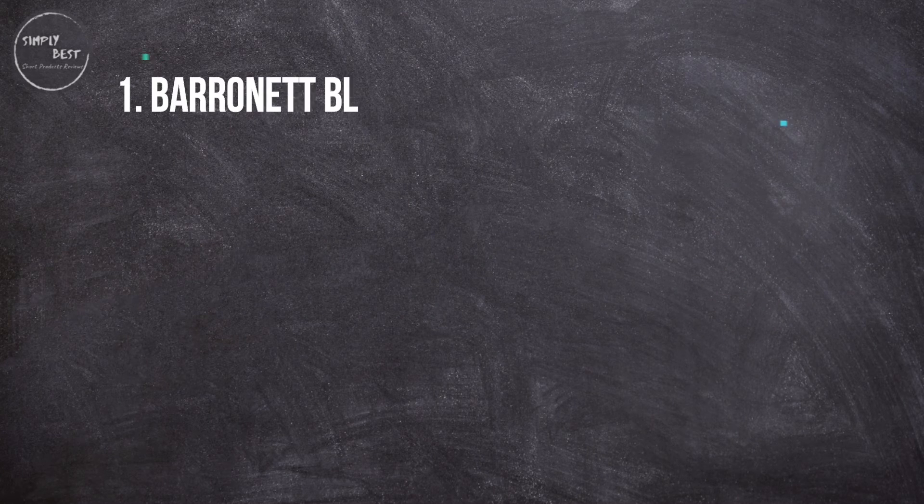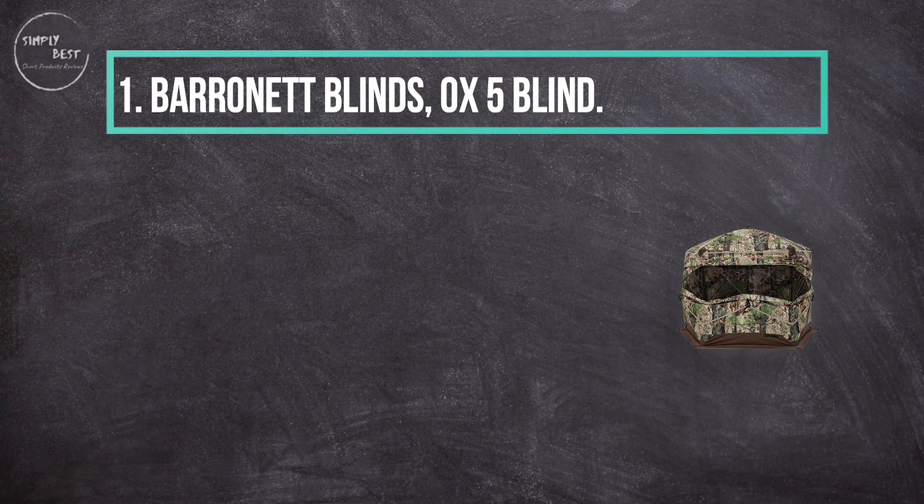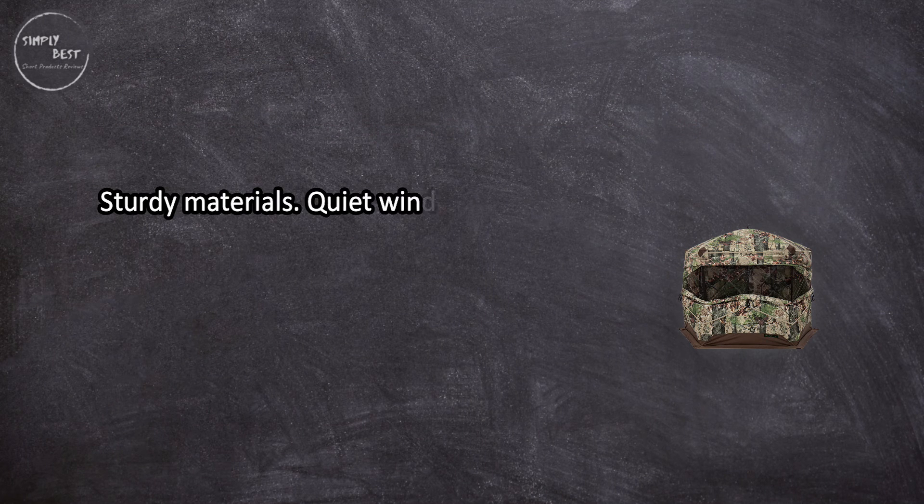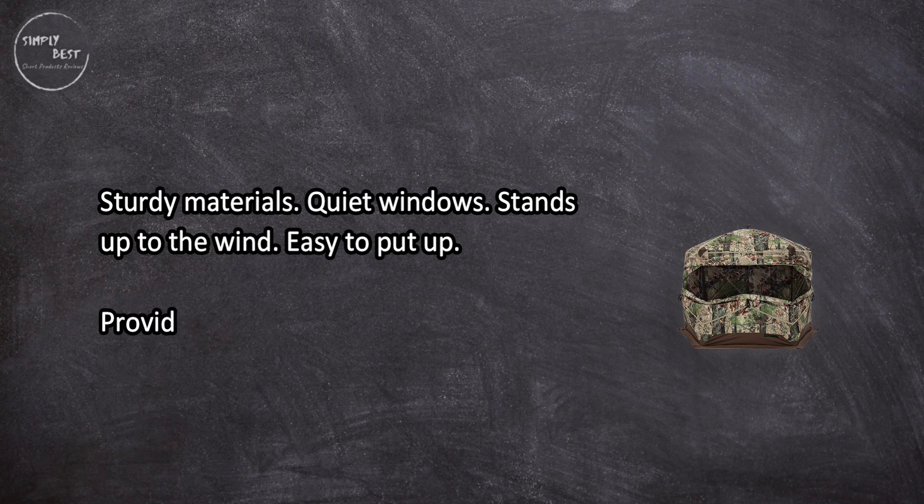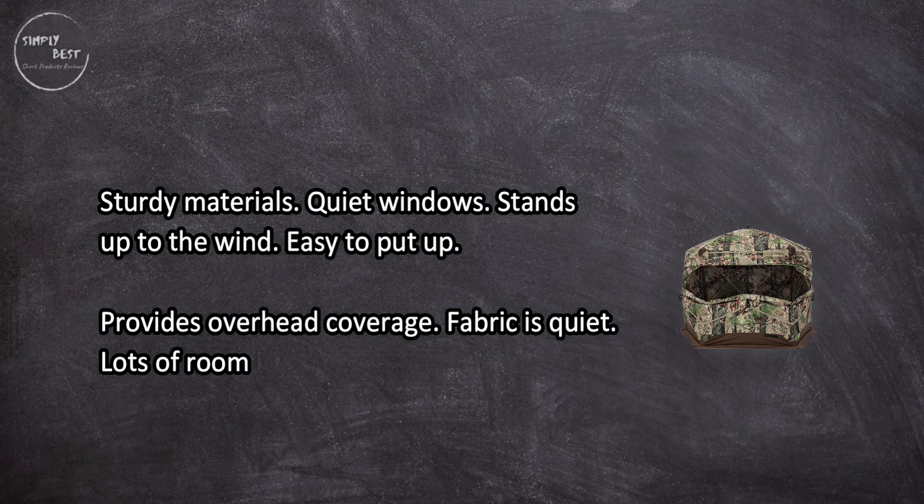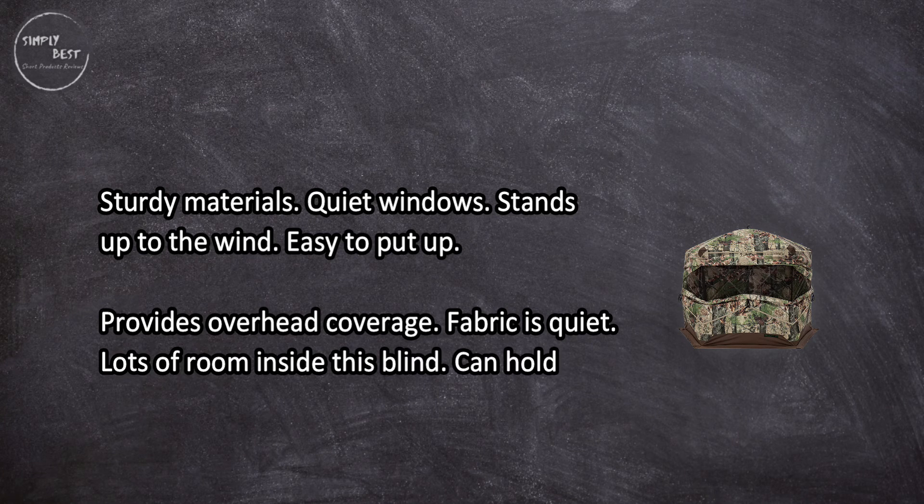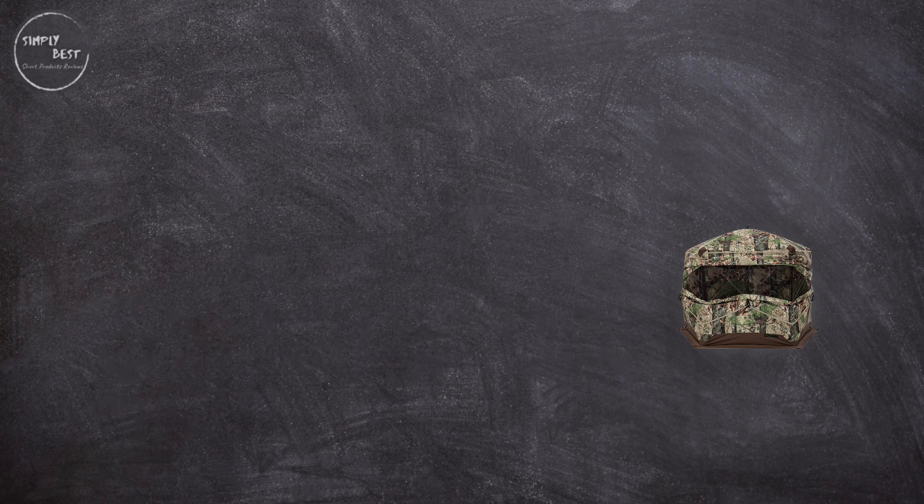At number one, Barronett Blinds OX 5 Blind: sturdy materials, quiet windows, stands up to the wind, easy to put up. Provides overhead coverage, fabric is quiet, lots of room inside. This blind can hold up to four people, not